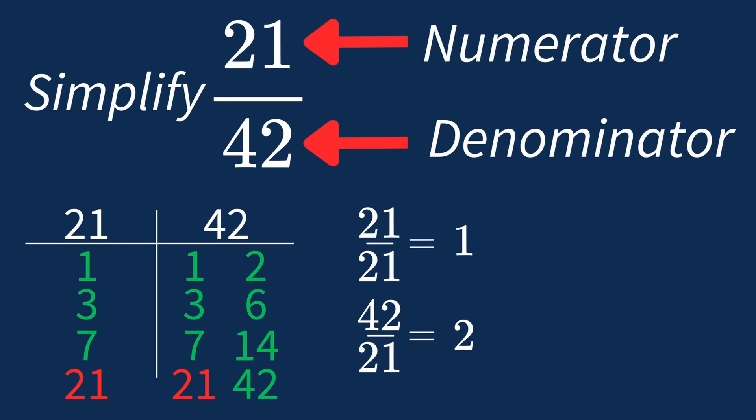So after dividing, the simplified fraction is 1 over 2. And we know that 1 over 2 is in its simplest form, because the only common factor between 1 and 2 is 1. And when 1 is the largest common factor, we know that our fraction has been simplified.